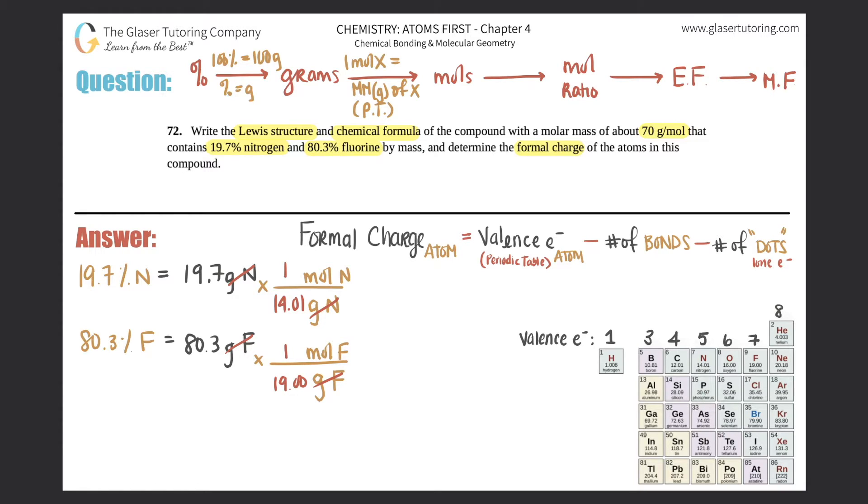We will calculate the moles of each atom. So 19.7 divided by 14.01, I'll say 1.406 moles of nitrogen. And then if we do 80.3 divided by 19, you get 4.226 moles of fluorine.